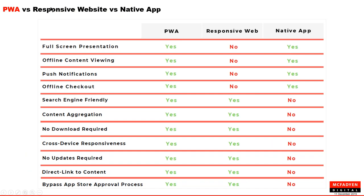Beyond page speed, PWA is a superset of both responsive and native. Features that native apps have — full screen presentation, offline content viewing, push notifications, and offline checkout — are all available in PWA. And things native apps cannot do — SEO-friendly indexing, content aggregation, no download required, cross-device responsiveness on iOS/Android/desktop, no updates required, direct deep linking to content like PDPs, and bypassing the iTunes or Google Play store approval process — are all available in PWA as well.